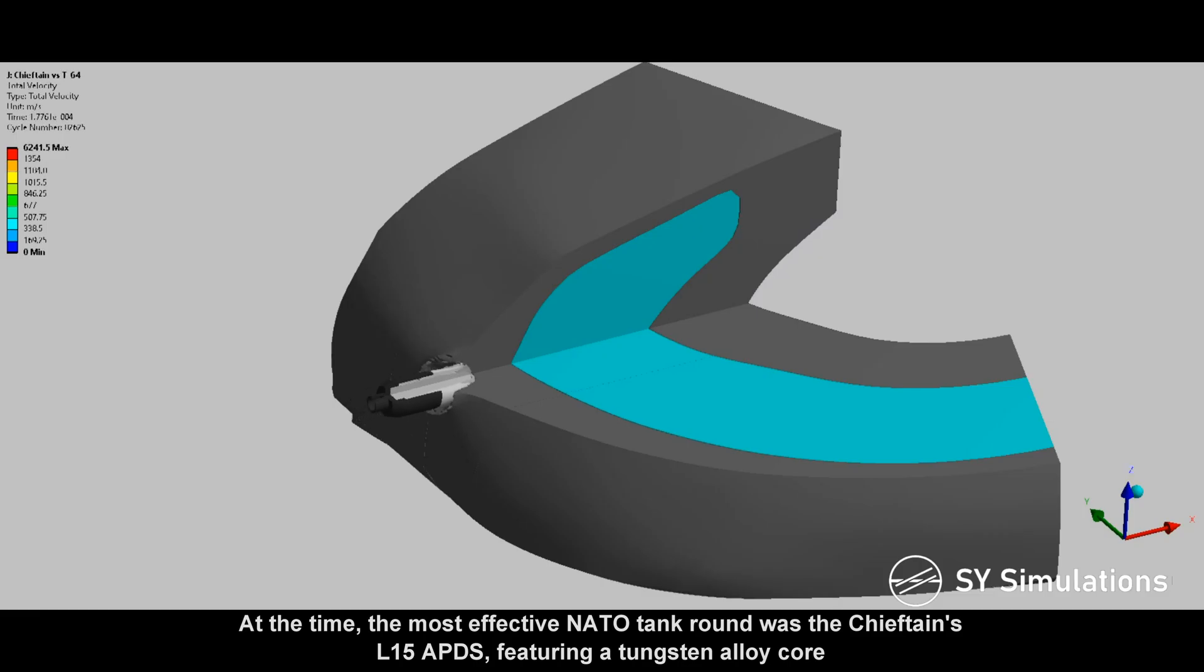At the time, the most effective NATO tank round was the Chieftain's L-15 armor-piercing discarding sabot, featuring a tungsten alloy core.